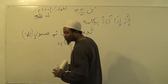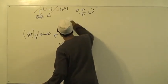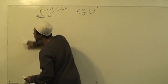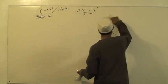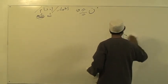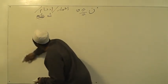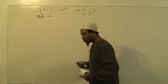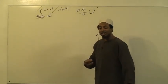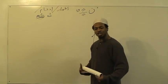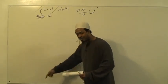Let me go over it again: وَثَانِ إِذْغَامٌ بِسِتَّةٍ أَتَتْ — with six letters — فِي يَرْمَلُونَ عِنْدَهُمْ قَدْ ثَبَتَتْ — in the word yarmaluna, according to the people of Adaa. Adaa — you'll hear this word all the time when you read the books and speak with scholars. Ahlul Adaa are the scholars of performance and recitation and presentation of the Quran.